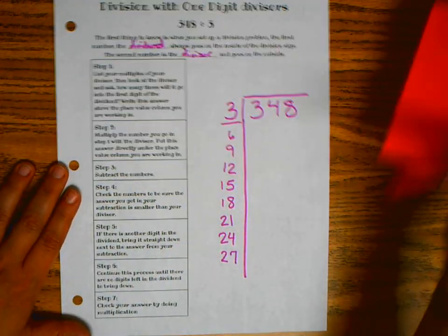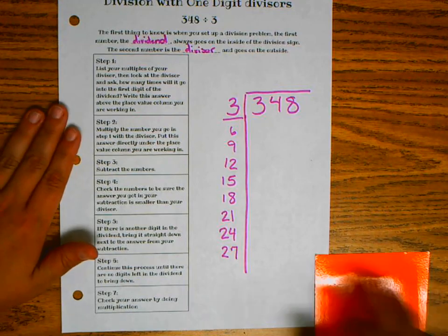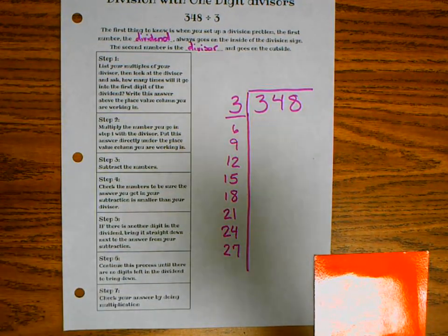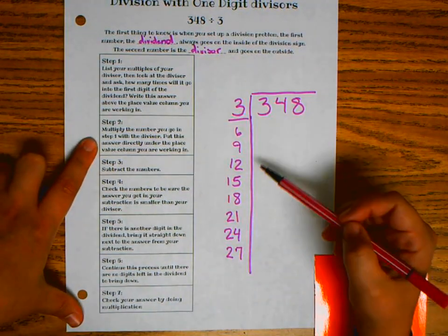And then you take it step by step. So out to the side here, the first step was to list your multiples. That's like your dividing step. The second step is to multiply.